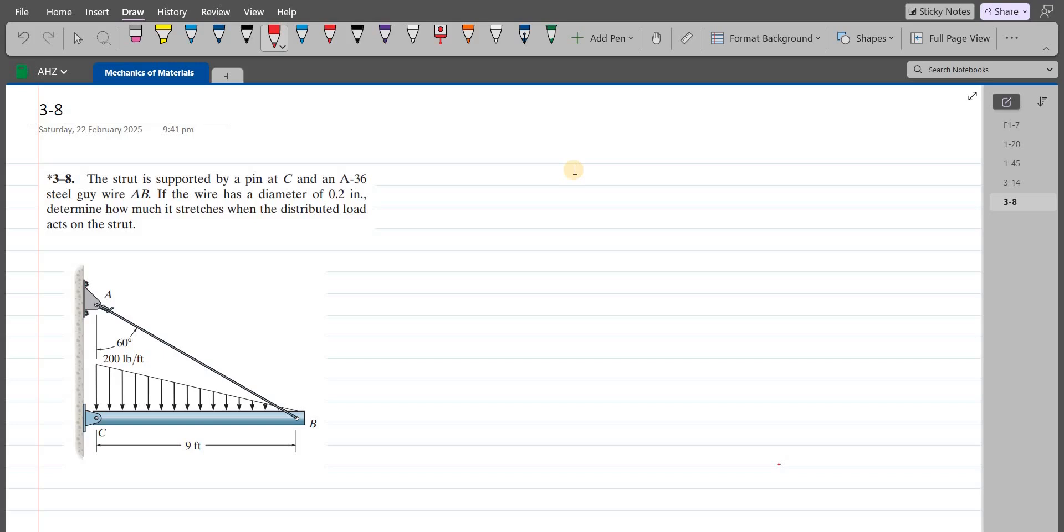To solve this problem, first we have to draw a free body diagram. At point C, we have a pin support, so we have a vertical support reaction and a horizontal support reaction. At point B, we have a tensile force due to this wire AB. We also have to find the resultant of this triangular distributed loading.